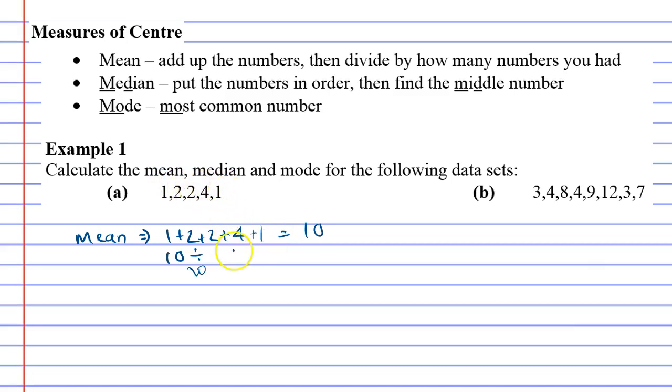you divide the 10 by how many numbers you have. 1, 2, 3, 4, 5. 10 divided by 5 equals 2. So 2 is your mean. It's also known as your